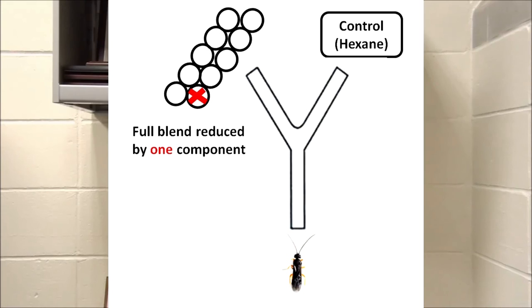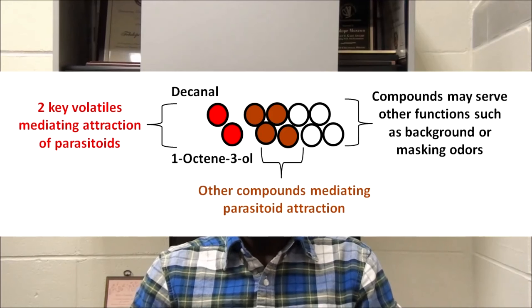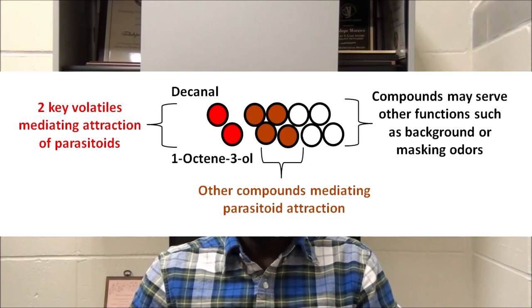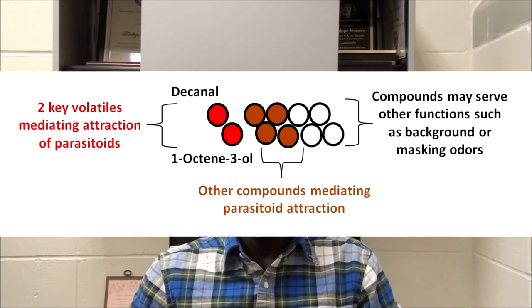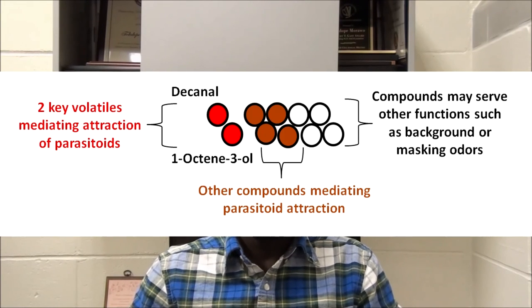In this study, we presented a reductionist approach whereby a full blend is reduced by a single component to determine the relevance of the missing compound. Our results showed that among several other volatile compounds, nonanal and ocimene contributed the most to the attraction of the parasitoid to its herbivore host.